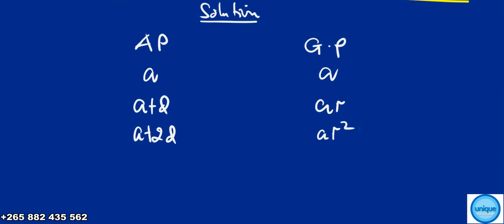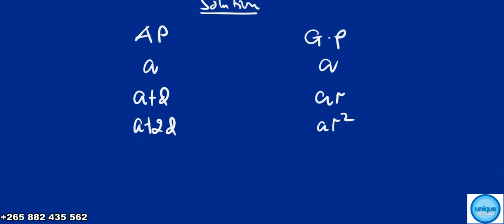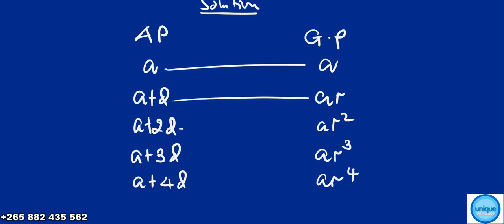The third term of AP is a plus 2d, which corresponds to ar squared. The fifth term, which is a plus 4d, corresponds to ar to the power 4. That's the relationship according to the question.